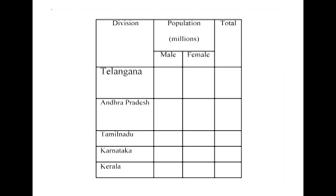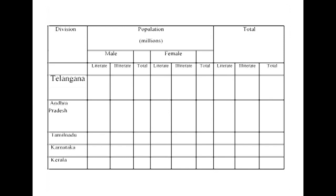Three-way table gives information regarding three mutually dependent and interrelated questions. The example table has a division column, population in millions, and total. The population in millions is divided into male and female, which is further divided into literate and illiterate. So there are columns for male literate, male illiterate, male total, female literate, female illiterate, female total, and overall literate, illiterate, and total. This table gives information concerning the literacy of both male and female in various South Indian states, and allows explanation of which sex has more education in relation to states and South India as such.